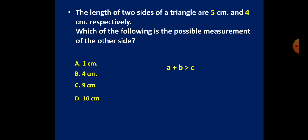Now it remains: 1 cm or 4 cm. Five plus four (9) is greater than both 1 and 4. But the statement 'a + b > c' is not sufficient alone. We also need: a − b < c. In a triangle, the difference of two sides is always less than the third side. Five minus four is 1, but 1 is not less than 1, so 1 cm is ruled out. But 5 − 4 = 1 is less than 4, so 4 cm is the only correct answer.